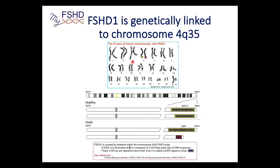The chromosomes are ordered based on size, so the fourth largest pair is chromosome 4. There's a structure on each chromosome that separates it into a short arm — the P arm, from the French word for small, 'petite' — and the Q arm, which is just the letter after P. The FSHD region is all the way out at the very end of the 4q arm, around the 35th banding — 4q35 — and that's where the D4Z4 repeat array is.